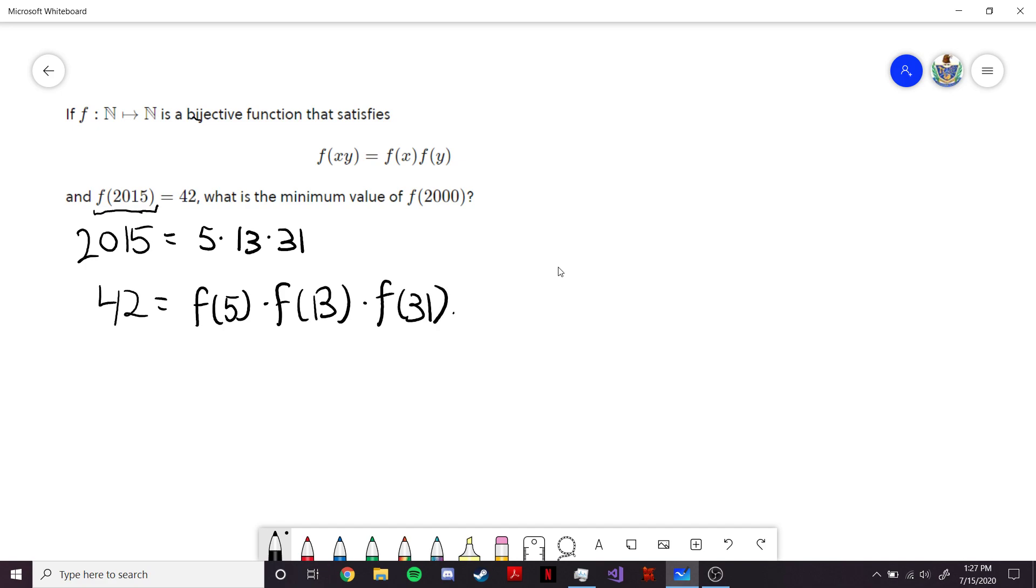Now, our goal is to find the minimum value of f(2000). And by minimum value, this essentially is hinting at the fact that the information we're given doesn't give us what f is precisely, but there are choices we can make to make f(2000) as small as it can be.